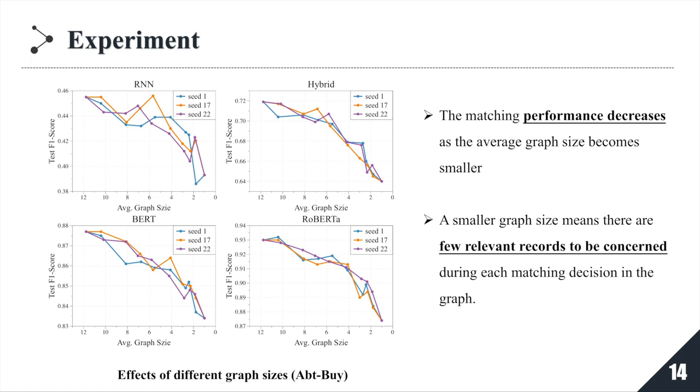When the graph size becomes 1, GNEM is essentially transformed into GNEM without interaction. In general, the matching performance benefits from referring to more relevant records.